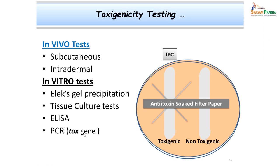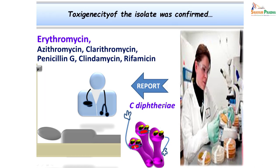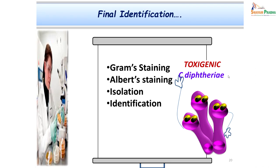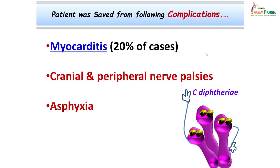These tests are very important to prove that this is a toxigenic strain and the real pathogen in the given case. In this case, final identification was done after toxigenicity testing, and the report sent was: toxigenic strain of Corynebacterium diphtheriae isolated. The patient was already on erythromycin; other drugs that could be used include azithromycin, penicillin G, clindamycin, and rifampicin. We were happy that we could save the girl, because immediate microscopy gave us the clue that it could be Corynebacterium, and toxigenicity testing confirmed it was Corynebacterium diphtheriae.